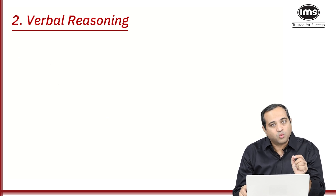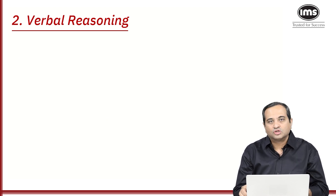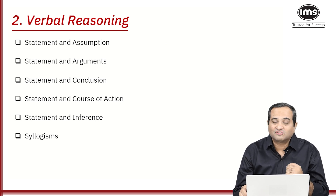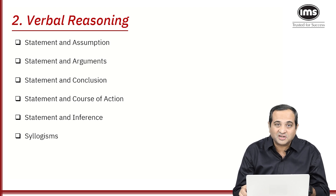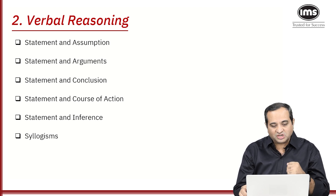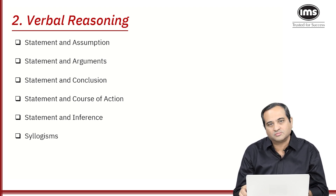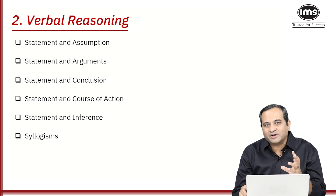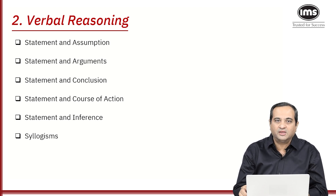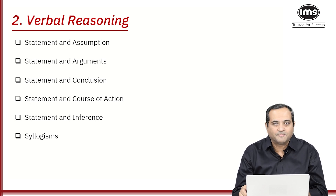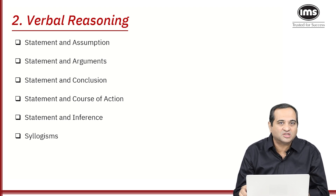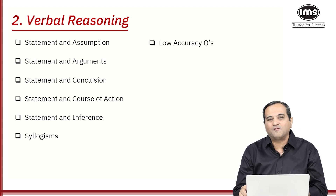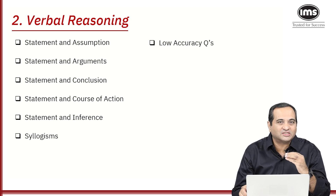Let's look at the different verbal reasoning types of questions. You have statement and assumption, statement and arguments, statement and conclusions, statement and course of action, statement and inference, and syllogisms. The weightage is approximately 9 to 10 questions out of 40. One important thing to remember: verbal reasoning questions are low-accuracy types of questions.